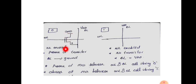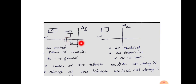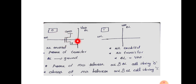So, whenever there is a transistor, the bit line voltage will be pulled down. Whenever there is a presence of transistor, the voltage at this bit line will be zero. So, zero will be stored whenever there is a MOS transistor. And when there is an absence of MOS transistor,